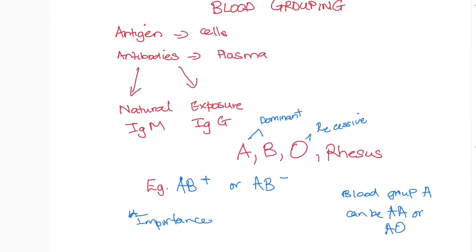Hello guys, welcome back to the DNN Medical Series. In today's tutorial video, I'll be looking at the blood grouping system. This system is very important — for example, if you're doing a blood transfusion, you need to know your blood type because certain blood types react with others. It's also important in pregnancy, especially in the case where a mother is Rhesus negative, which we will get into later.